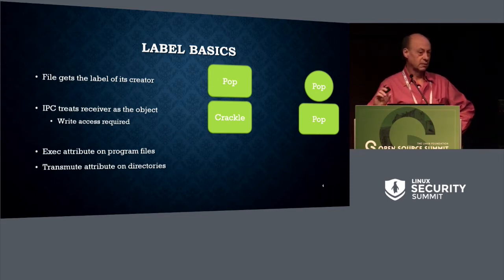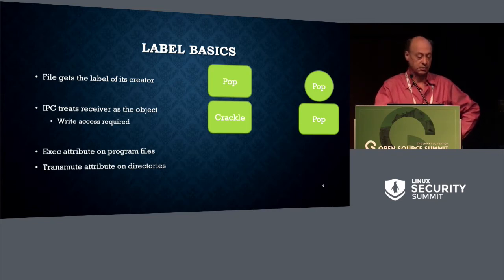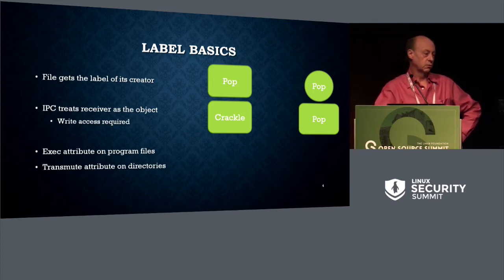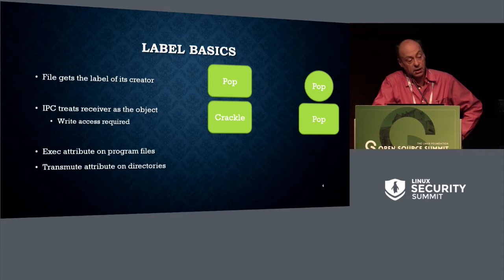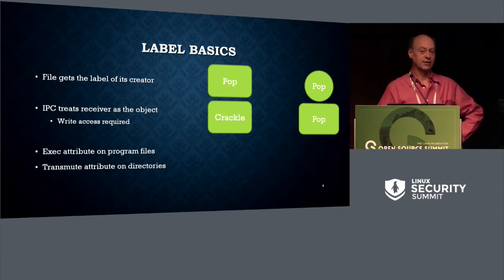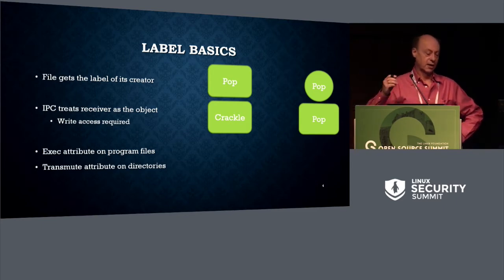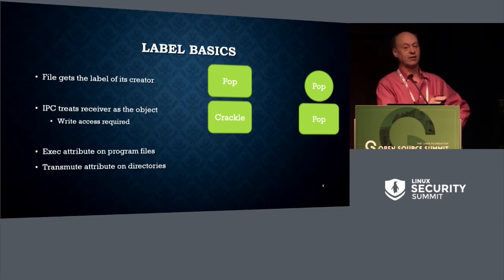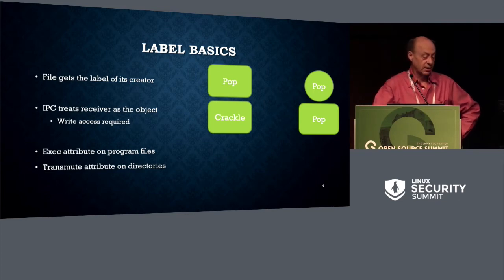We have a couple of other process or process file attributes we can use to clear up some of the more obvious problems. For example, we have an exec attribute you can put on a program file so that the process will run with that SMAC label instead of the label of the process that invoked it. We also have a transmute attribute you can put on a directory so that files created in that directory will get the label of the directory rather than that of the process, under certain circumstances.